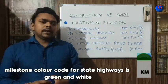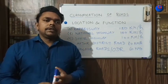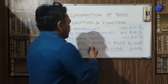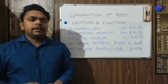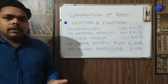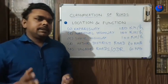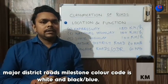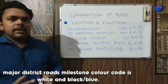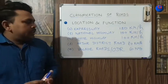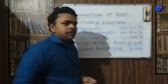State highways function to connect the capital of the state with the districts of that state. Their design ruling speed is also 100 kilometers per hour. Major district roads are within the periphery of districts — they connect towns with district industrial areas and market places. Their ruling design speed is 80 kilometers per hour.